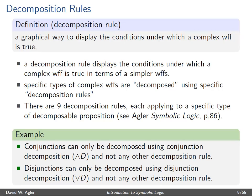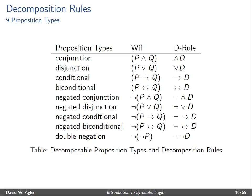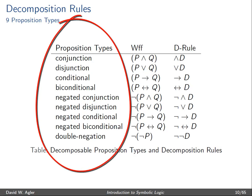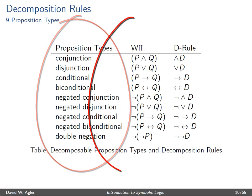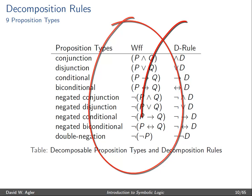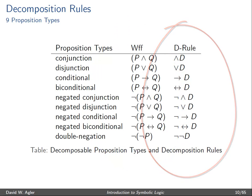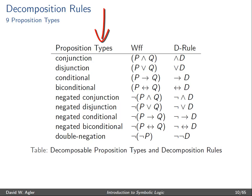So let's take a look at all of the decomposition rules — all of the proposition types that can be decomposed, their corresponding well-formed formula, and the decomposition rule. Notice that there are nine proposition types that can be decomposed: the conjunction, disjunction, conditional, and biconditional, and the negated form of each — the negated conjunction, the negated disjunction, and so forth.